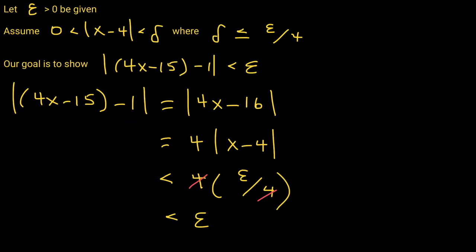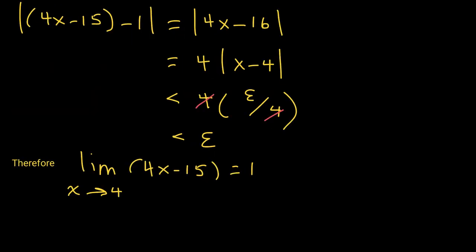The distance between your function and 1 is less than epsilon. You have proven that for any epsilon greater than 0, the function values will be less than that many units from 1, as long as the distance between x and 4 is less than delta, where delta is epsilon over 4. Therefore, the limit of 4x minus 15 as x approaches 4 is equal to 1.